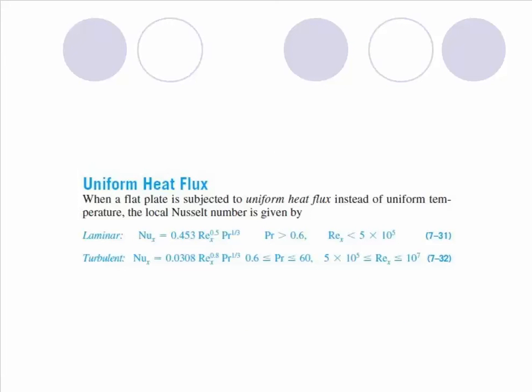Then we have the case of uniform heat flux. When a plate is subjected to uniform heat flux instead of uniform temperature, the local Nusselt number for laminar flow is given by 0.453 × Re^0.5 × Pr^(1/3).